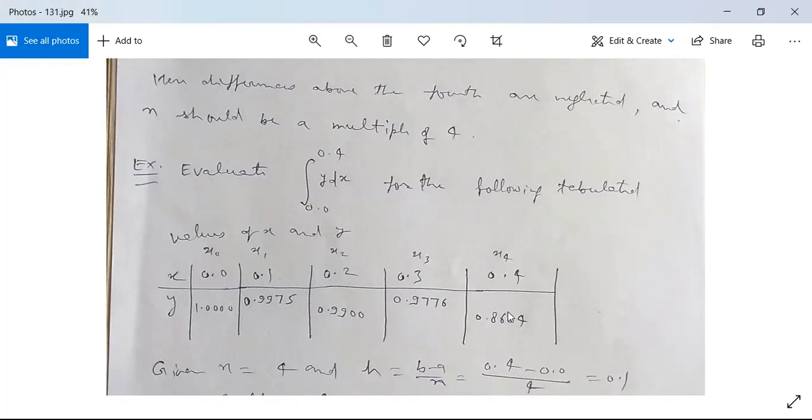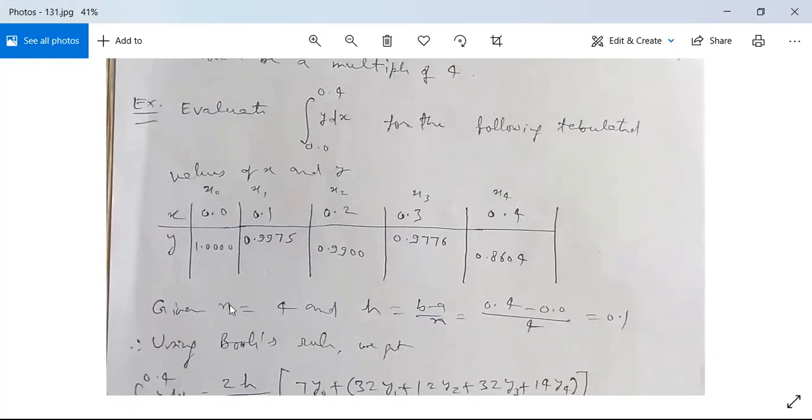The values are 0.0, 0.1, 0.2, 0.3, and 0.4, and the corresponding values of y are 1.0000, 0.9975, 0.9900, 0.9776, and 0.9604. It is given n equals 4 because we have x₄, and h is given as (b minus a)/n. From the formula, b is 0.4 and a is 0.0, so it is 0.4 minus 0.0 by 4.